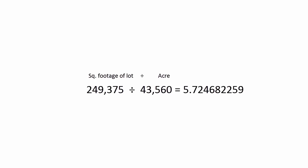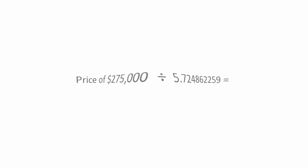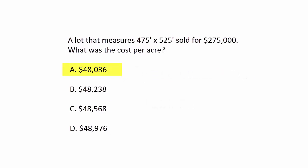You get the price of the property and divide it by that long number, and what you get is $48,036.09. Here's an interesting thing: if you round it off from that calculator, your number is going to be a little different. Go ahead and try that. Hope you enjoyed it. Everything I do is a work of art at PrepAgent.com.